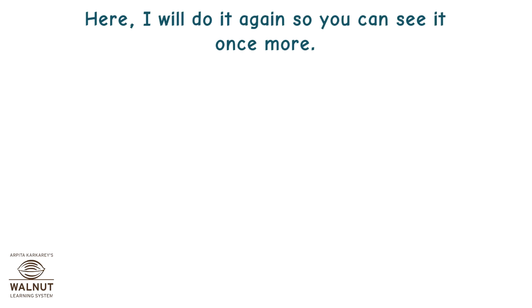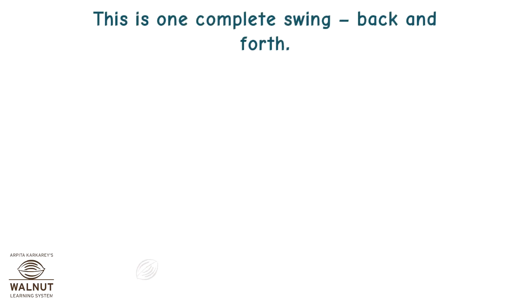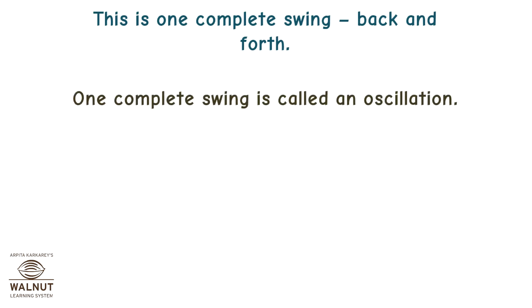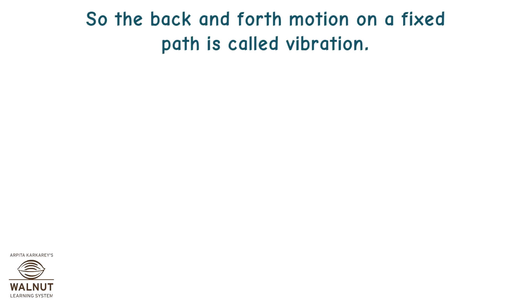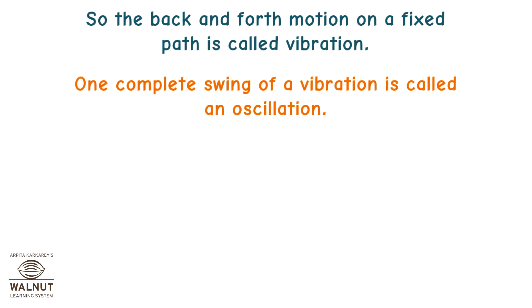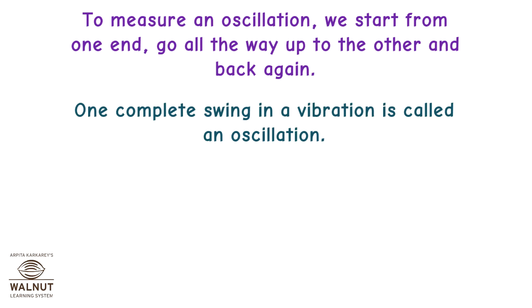I will do it again so you can see it once more. We will start at one side, move through the center all the way up to the other side and then back again through the center to the side that we started from. This is one complete swing back and forth. One complete swing is called an oscillation — that is another special word to remember. So the back and forth motion on a fixed path is called vibration, and one complete swing of a vibration is called an oscillation.